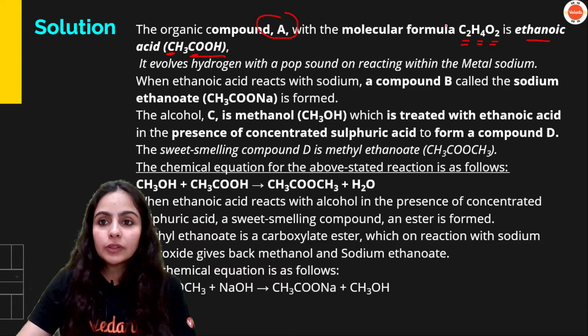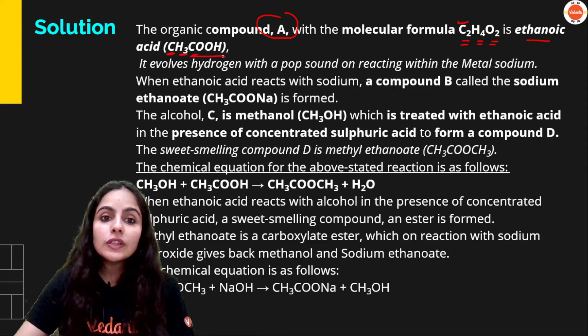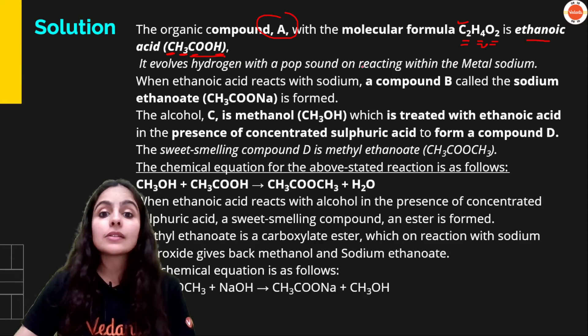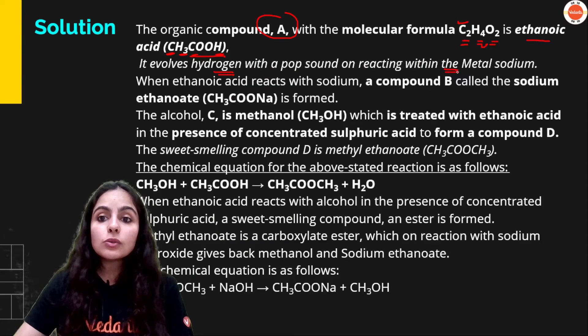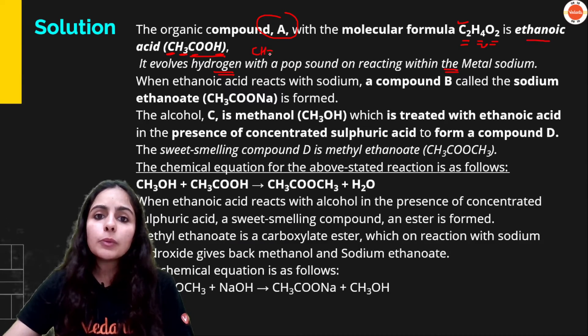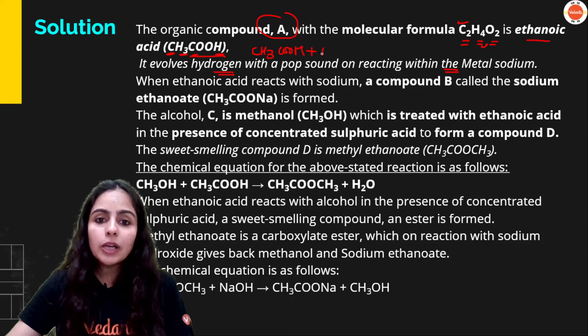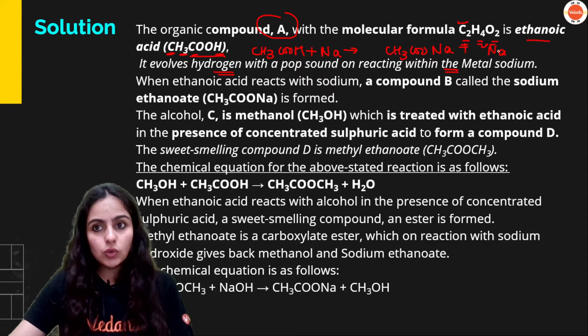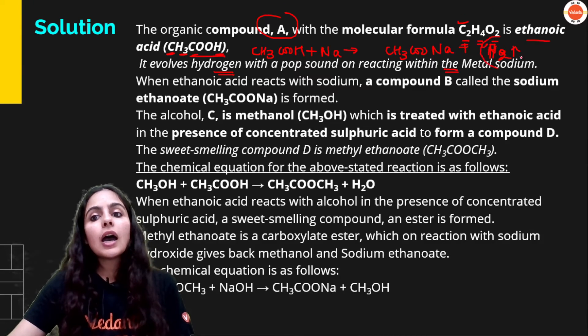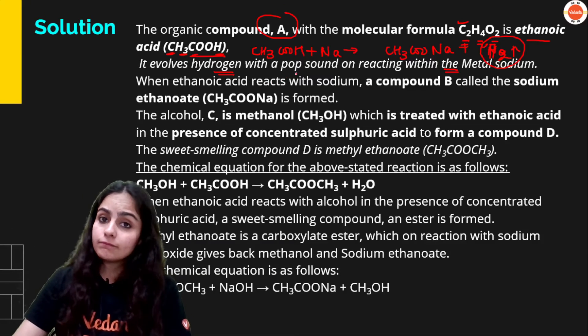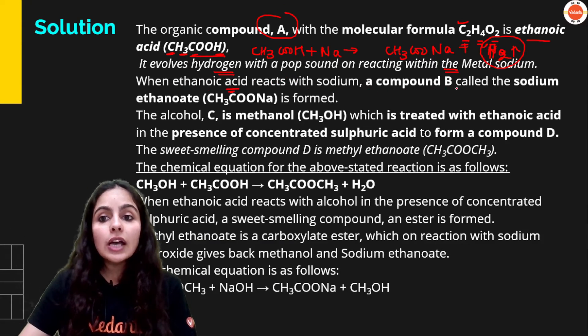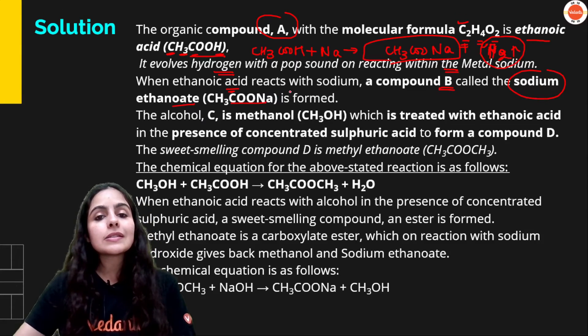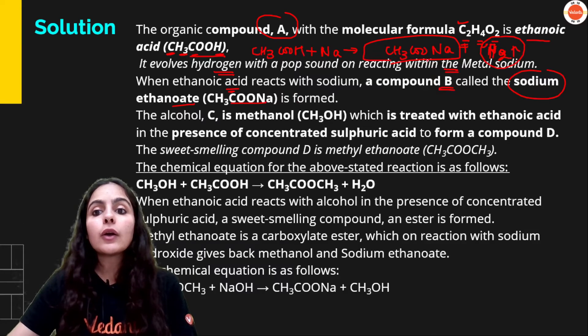So your compound A, jiska molecular formula C2H4O2 hai, is ethanoic acid. Ek carbon, do carbon hai, two carbons, four hydrogens, two oxygens. That's ethanoic acid. And ye evolve karta hai hydrogen gas on bonding or reacting with metal sodium. So agar hai bolu CH3COOH plus sodium Na, toh kya banayega? CH3COONa plus hydrogen. Hydrogen is the gas which burns with a pop sound.